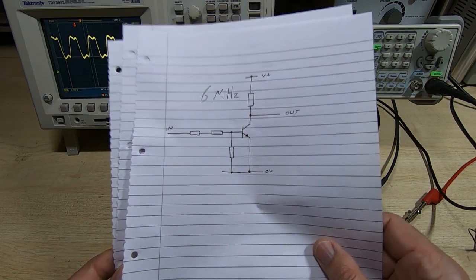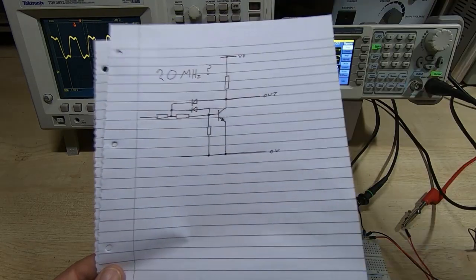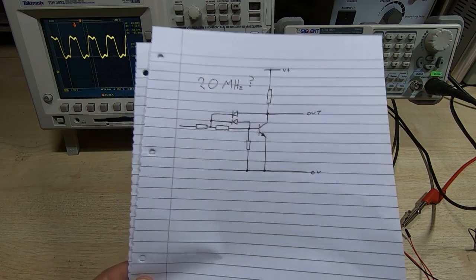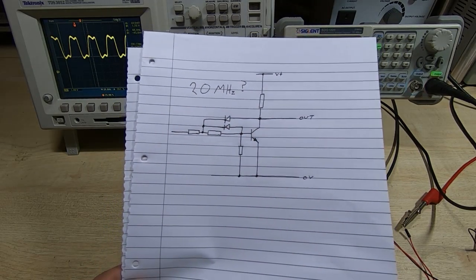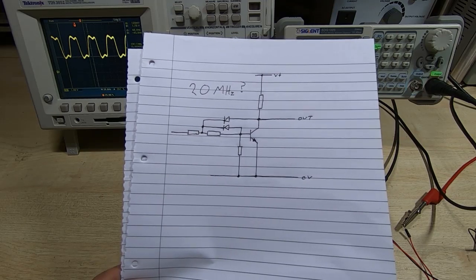If we put a simple reverse bias clamp on, then we can switch at 20 megahertz - we just get a fairly poor signal. And if we put in a proper clamp, then we get good operation up to 20 megahertz.